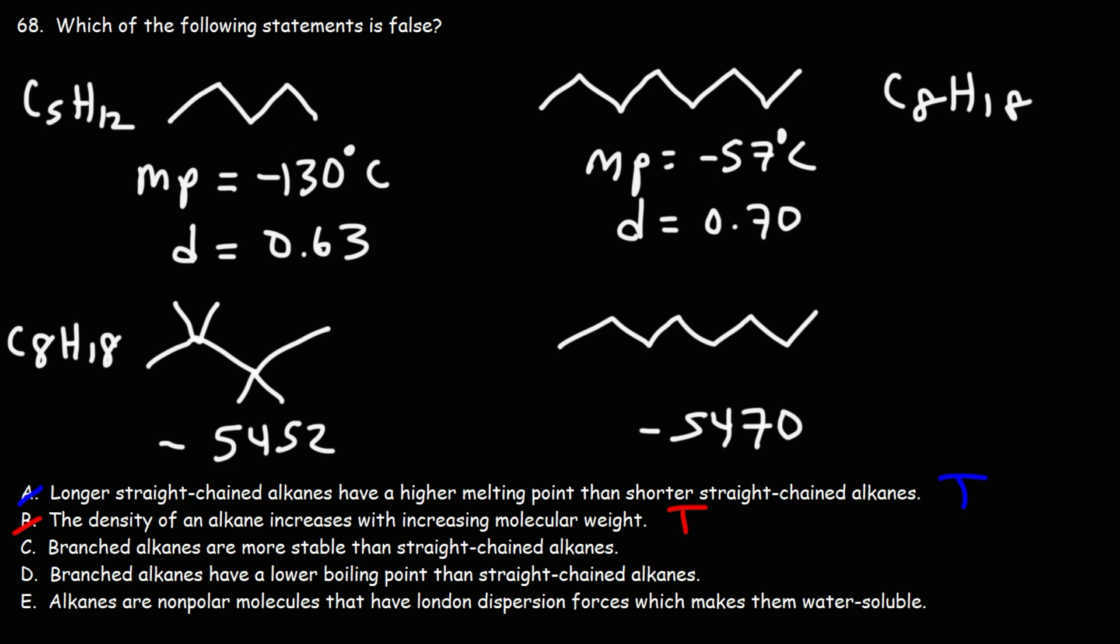The alkane with the lower heat of combustion, that is, the lowest absolute value of the heat of combustion, is going to be the one that is most stable, because it releases less energy when reacting with oxygen to produce carbon dioxide and water.